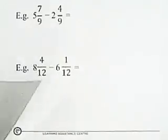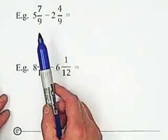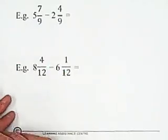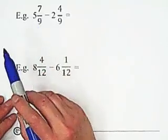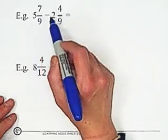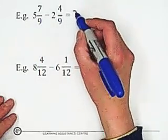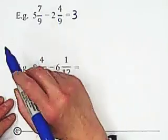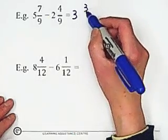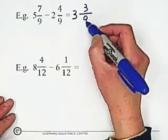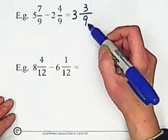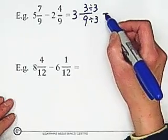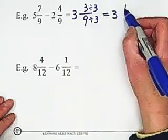Next, I will show you subtraction. For subtracting mixed numbers with same denominator, follow the same rule as addition. Subtract the whole number portion: 5 minus 2 equals 3. Because of same denominator, subtract the numerators: 7 minus 4 equals 3. Keep denominator unchanged. And this still can be simplified by dividing 3 into the top and bottom. So we got 3 and 1 over 3.